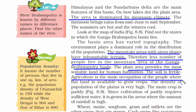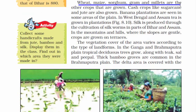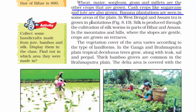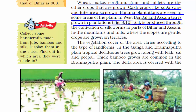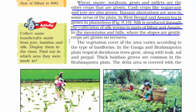Agriculture is the main occupation of the people. Wheat, maize, sorghum, gram, and millets are crops that are grown. Cash crops like sugarcane and jute are also grown. Banana plantations are seen in some areas of the plain. In West Bengal and Assam, tea is grown in plantations. Silk is produced through the cultivation of silkworms in parts of Bihar and Assam. In the mountains and hills where the slopes are gentle, crops are grown on terraces.